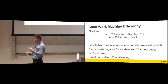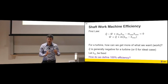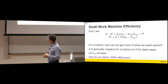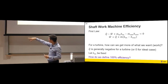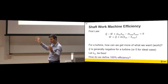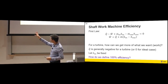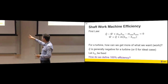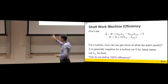Power — work with a dot above it — is what you want. Q is either zero (adiabatic) or slightly negative, since typically you lose some heat from a turbine because it's hot. Mass flow is defined by your system. With a fixed enthalpy in, how do we define 100% efficiency for the turbine?